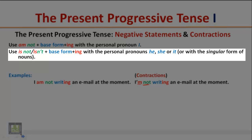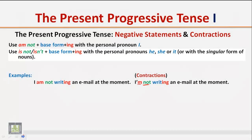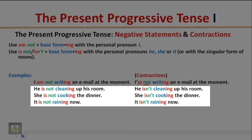Use 'is not' or 'isn't' plus the base form plus '-ing' with the personal pronouns 'he,' 'she,' or 'it,' or with the singular form of nouns. Examples: 'He is not cleaning up his room.' / 'He isn't cleaning up his room.' 'She is not cooking the dinner.' / 'She isn't cooking the dinner.' 'It is not raining now.' / 'It isn't raining now.'